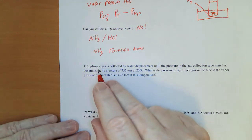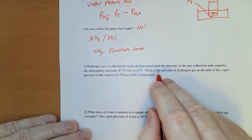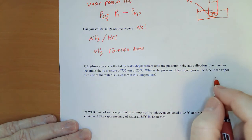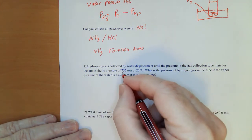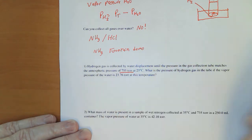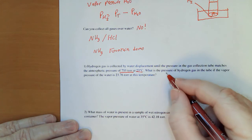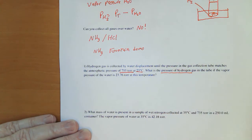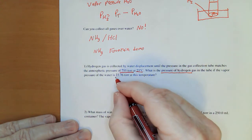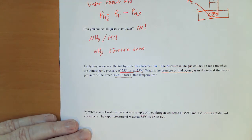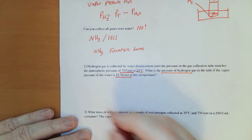Mathematically, hydrogen gas is collected by water displacement until the pressure in the gas collection tube matches the atmospheric pressure of 755 torr at 25 degrees Celsius. What is the pressure of the hydrogen in this tube given the vapor pressure of water is 23.76 at this temperature?